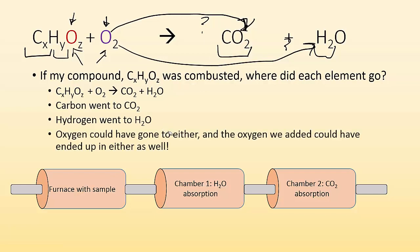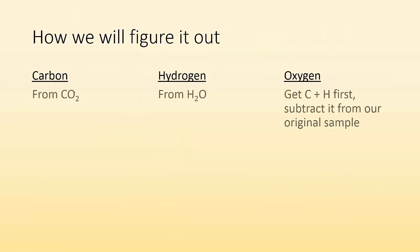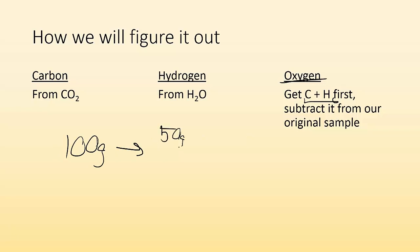The way we figure it out: carbon we can get from the CO2, hydrogen from the H2O. For oxygen, we first get the carbon and the hydrogen, then we subtract from our original sample. For example, if I started with 100 grams and found 50 grams of carbon and 25 grams of hydrogen, the rest would have to have been oxygen. So we get carbon and hydrogen first, figure out how many grams each were, and then determine how much oxygen was there.